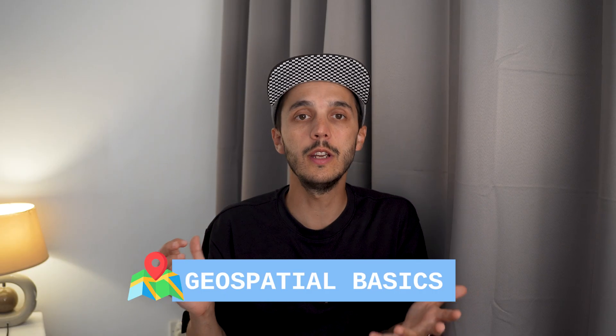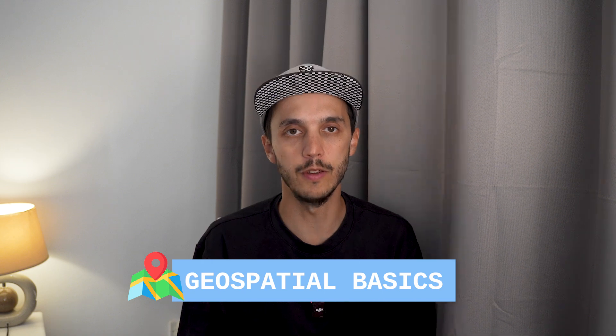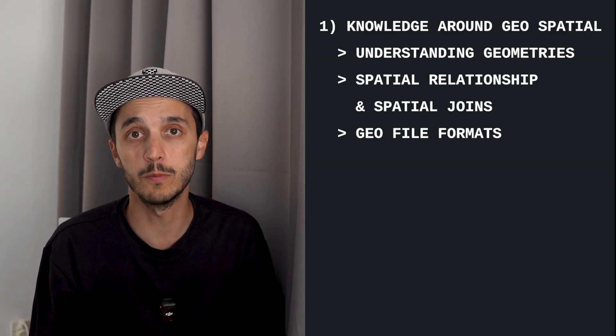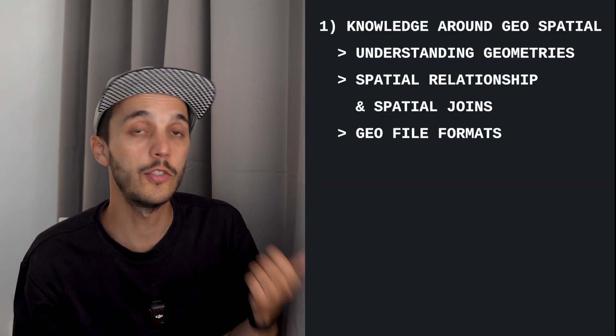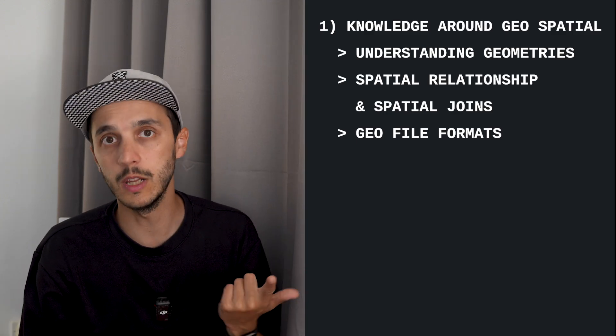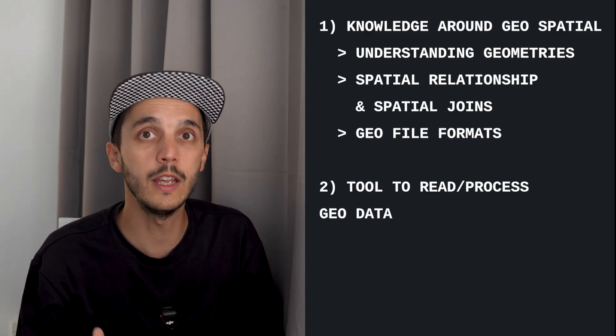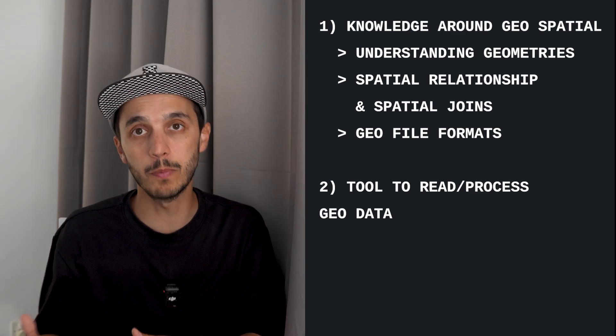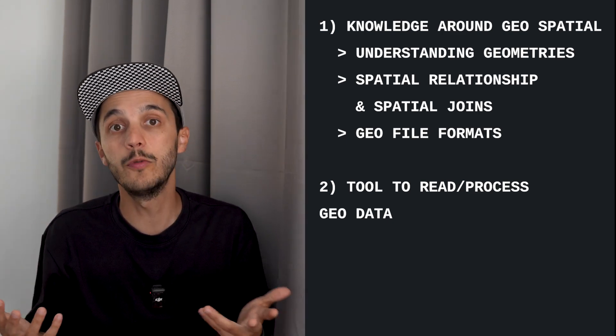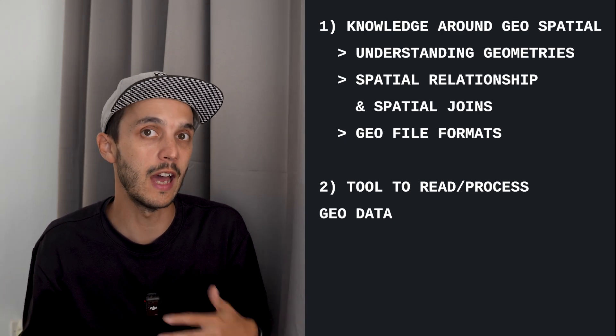To start your journey around geospatial, you need essentially three things. First is knowledge around geospatial analysis — that includes understanding geometries, spatial relationships with spatial joins, and understanding standard file formats. The second thing is a data tool to read, process, and export geospatial data. And the third thing is a tool to visualize and plot what you are doing and iterate. This video aims to cover the geospatial concepts we'll need to build this map, and I'll leave more resources if you want to dig further.